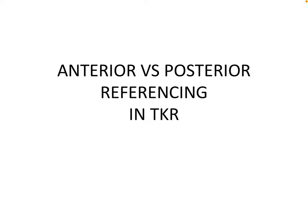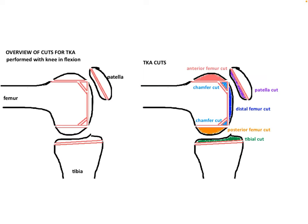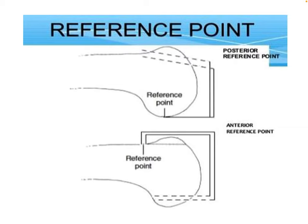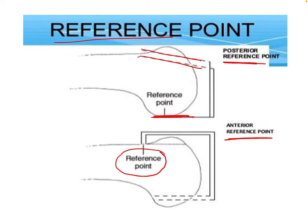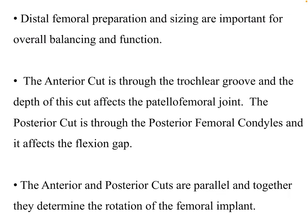Hello friends, this video is in continuation with the bony cuts in a total knee replacement video. Here we will discuss anterior versus posterior referencing in a total knee replacement. Anterior and posterior referencing is used while doing the anterior and posterior femoral cuts, which will affect the flexion gap. In posterior referencing, we take a fixed posterior reference point and the anterior cut is variable. In anterior referencing, we take a fixed anterior reference point and the posterior cut is variable.